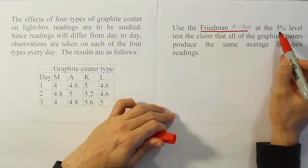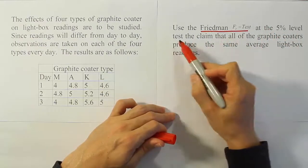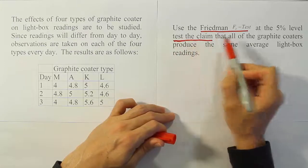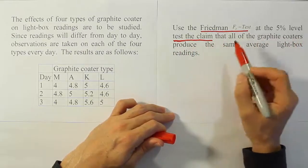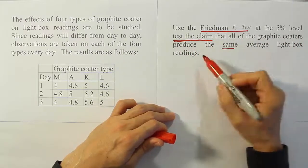It says use it at the 5% level of significance to test the claim. So again, test the claim indicates it's a hypothesis test that all the graphite coaters produce the same average lightbox readings.